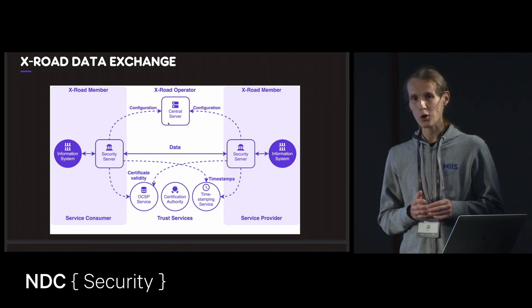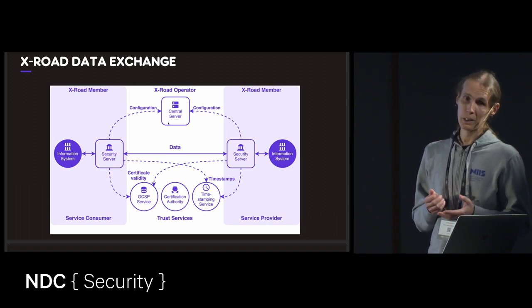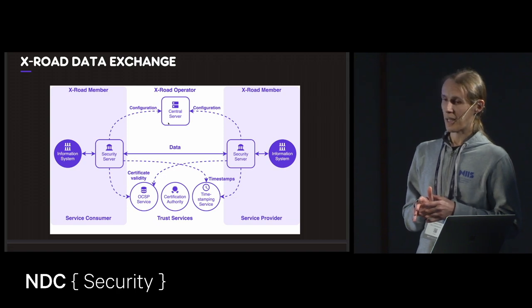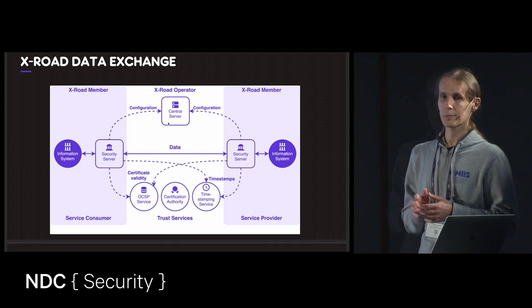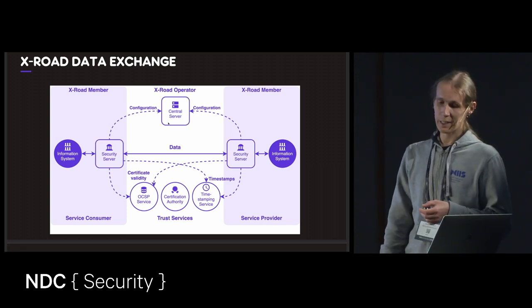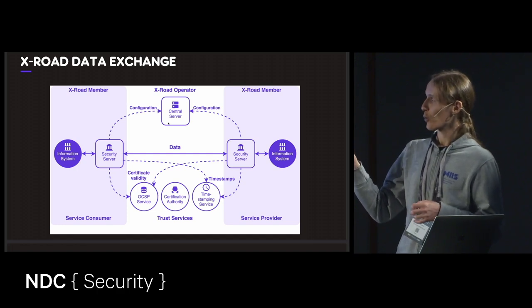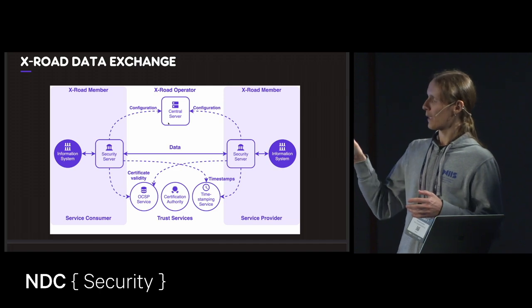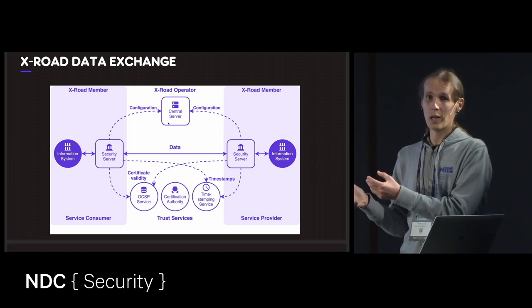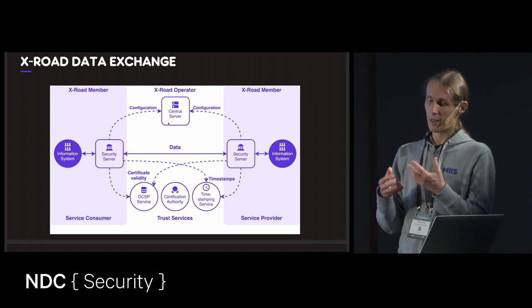Regarding service discovery, the XROAD ecosystem usually has a service catalog — a web portal listing all organizations, their services, and service descriptions. The service catalog is not part of the XROAD core, but XROAD provides interfaces to collect service-related information from security servers. The visualization layer is implemented by each XROAD operator — Finland, Estonia, and Iceland each have their own — and they typically go down to the endpoint level to make services findable.